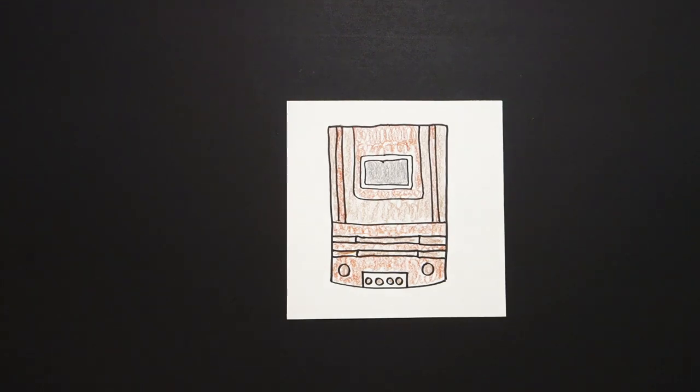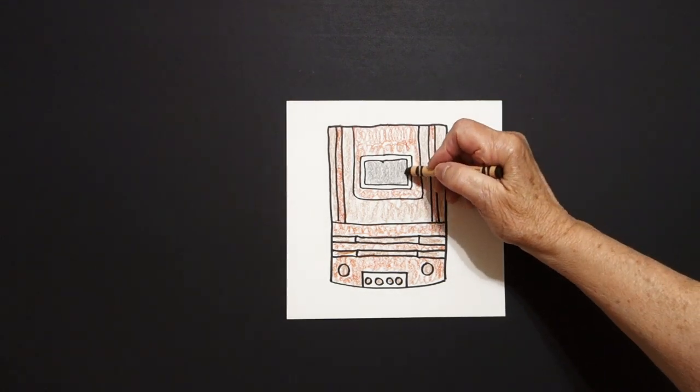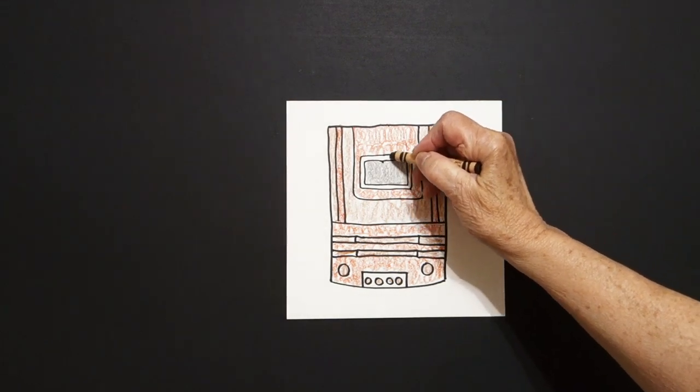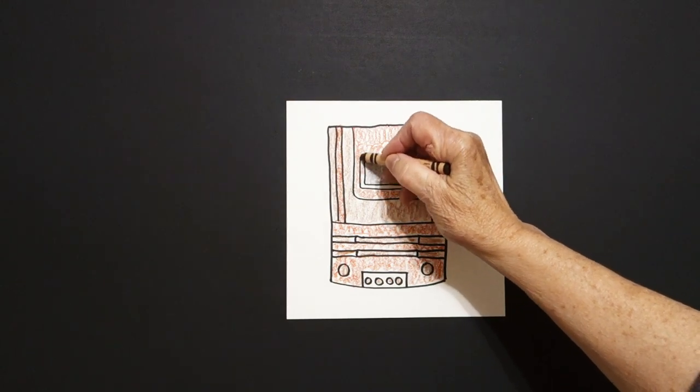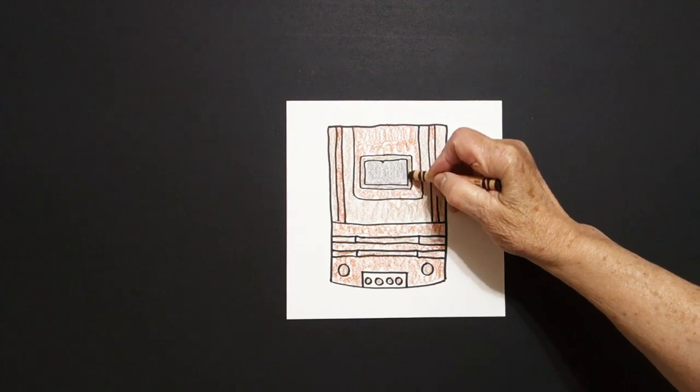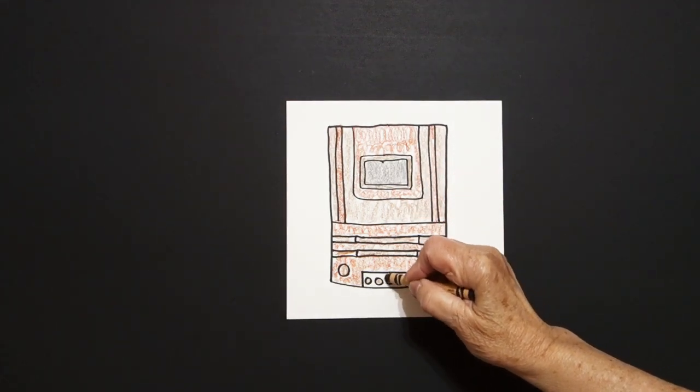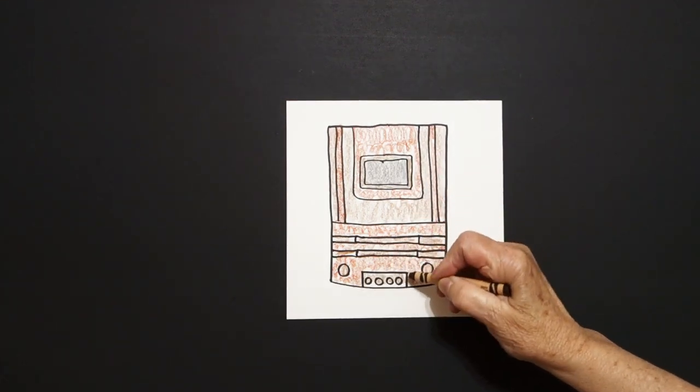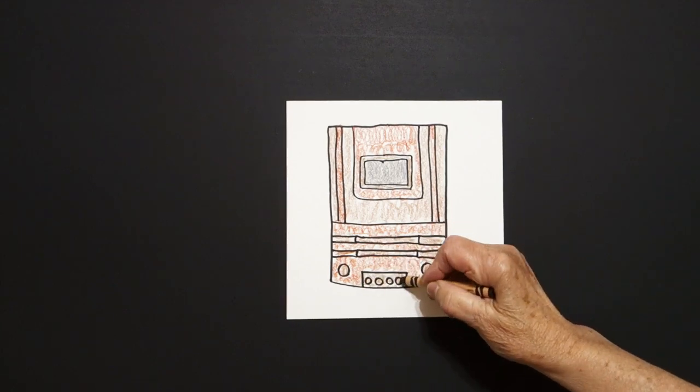And I'm assuming these baby circles are the knobs or part of the sound system that they would use. Now with my last brown, I'm going to color this outside piece around the screen. And come down and color the outside part of this screen, or I mean, of these little baby circles.